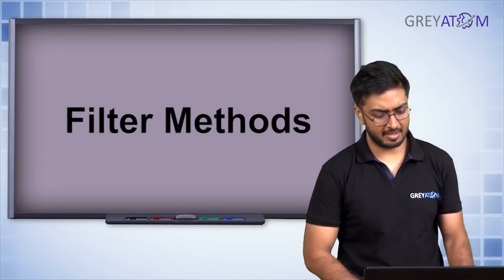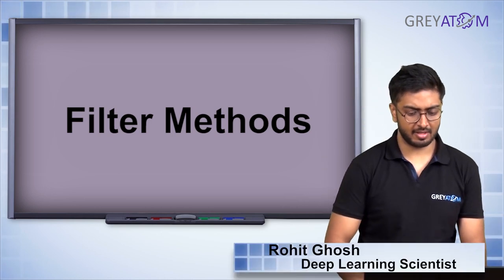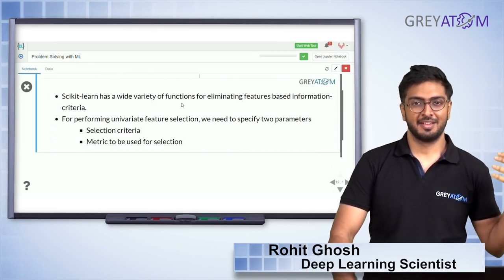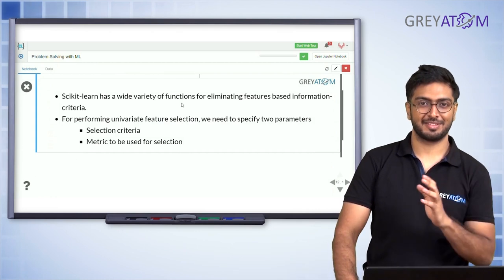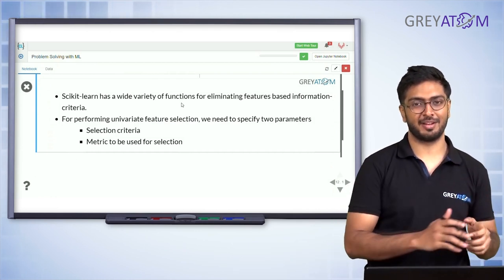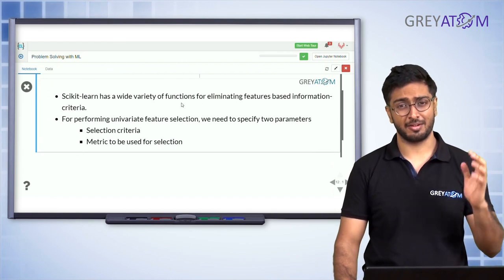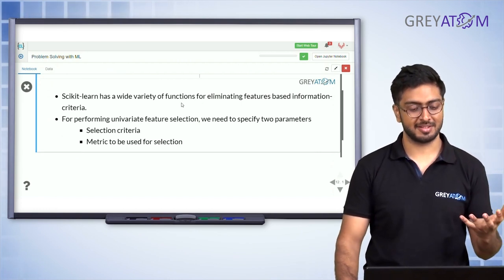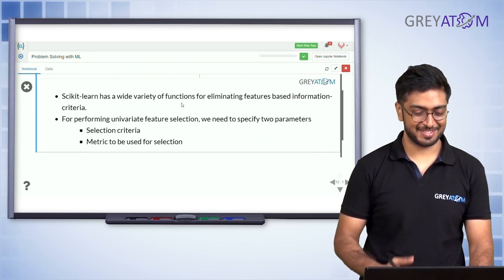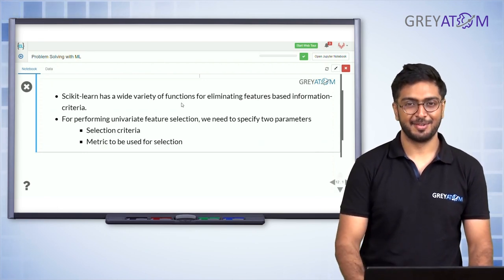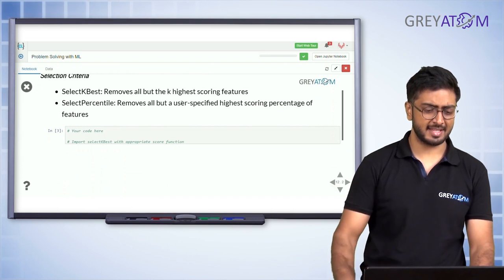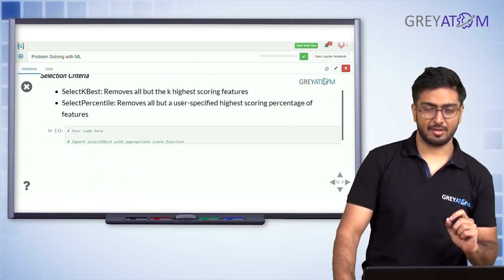Let's go into Scikit-learn and see how we can use feature selection directly. You don't want to look at each feature one by one and do variance thresholding or Pearson correlation manually, so Scikit-learn offers all of that for free.